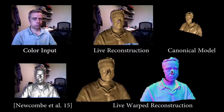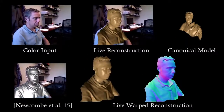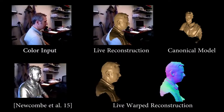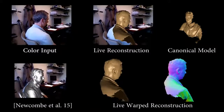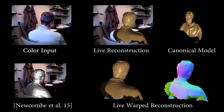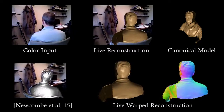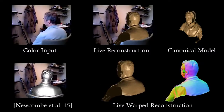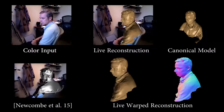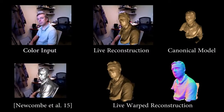In this example, we show that our method handles loop closure with similar or even better quality. Our sparse color feature term, as well as the finer-grained deformation, allows us to obtain results with less drift. As a result, our reconstruction has fewer artifacts such as holes.